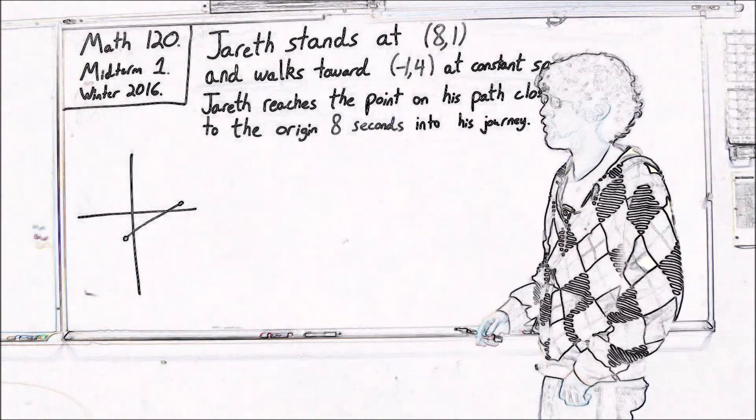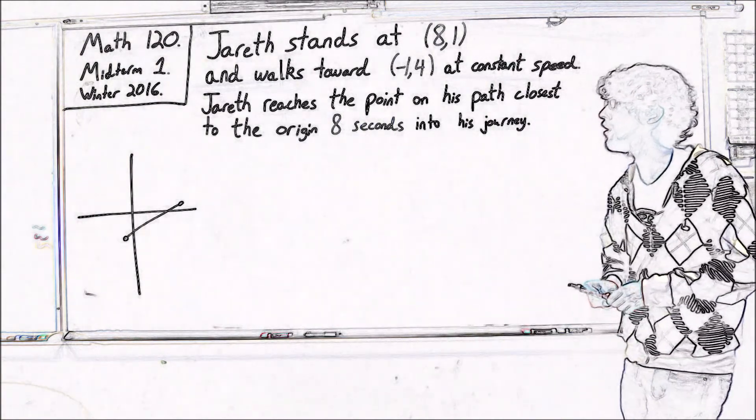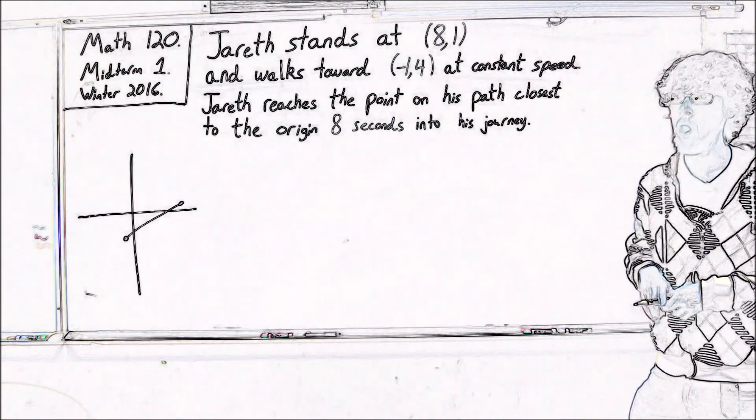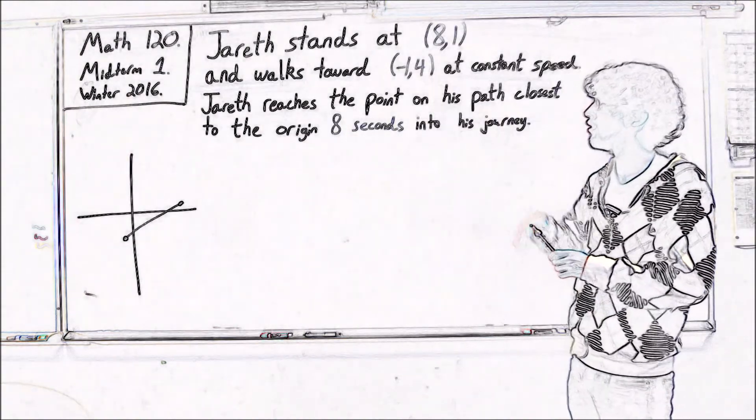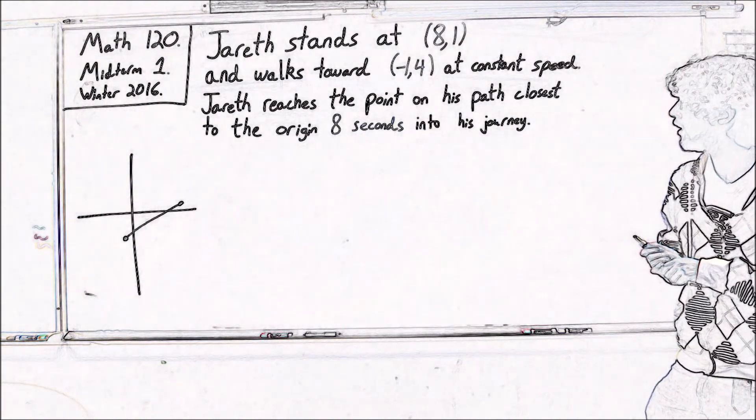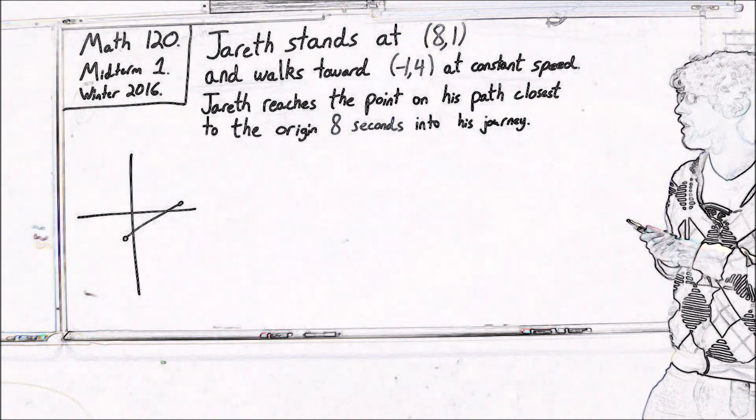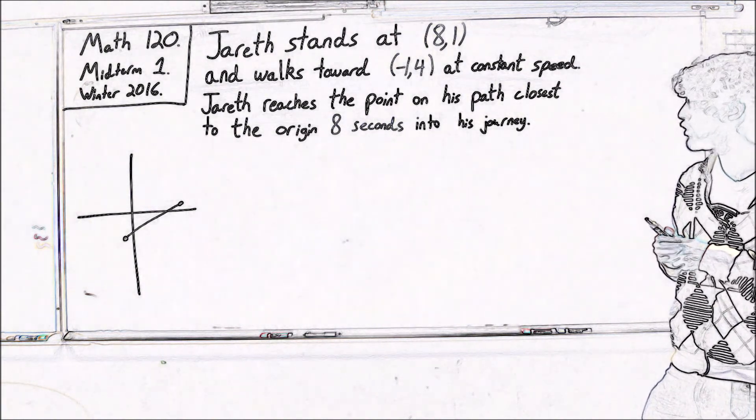So we're looking at problem 3 from the winter 2016 midterm 1. We have Jareth who stands at (8,1) and walks towards (-1,-4). And we know this one kind of strange thing about Jareth's motion.